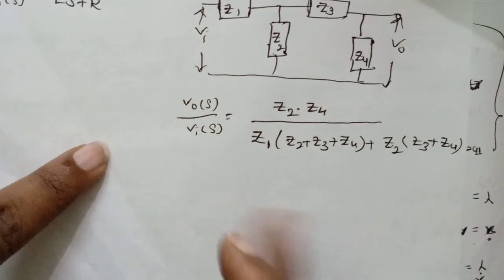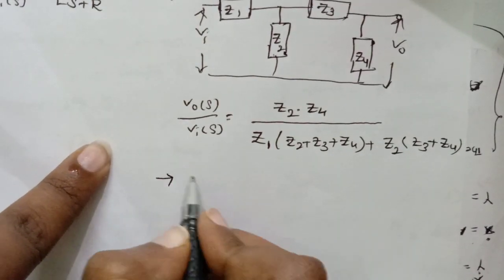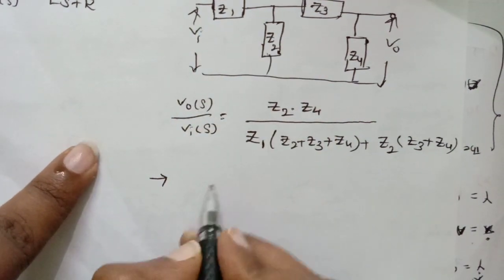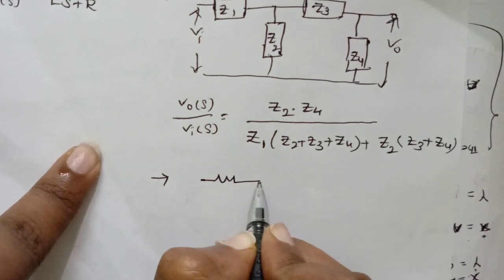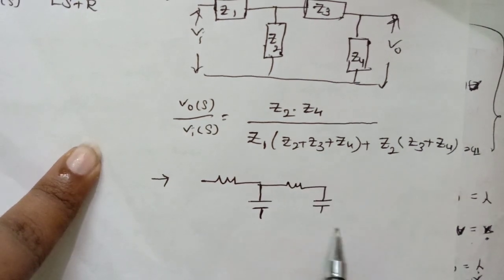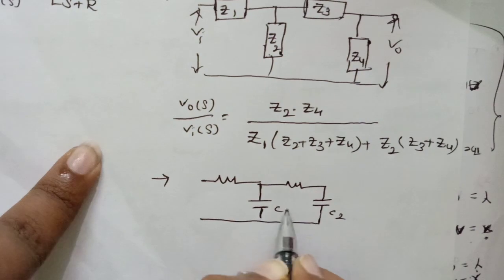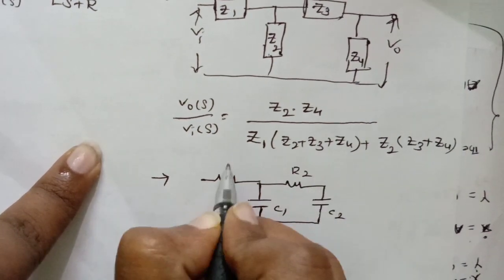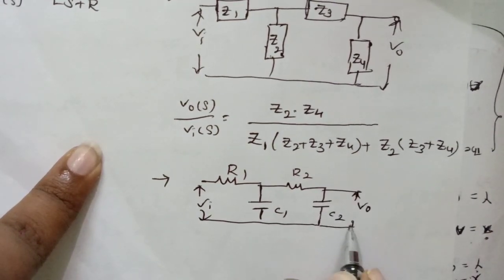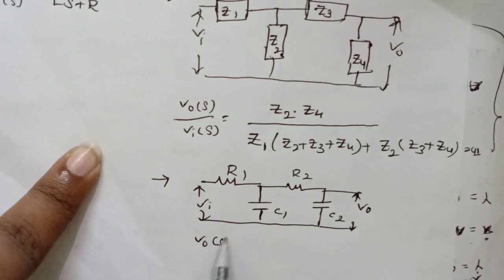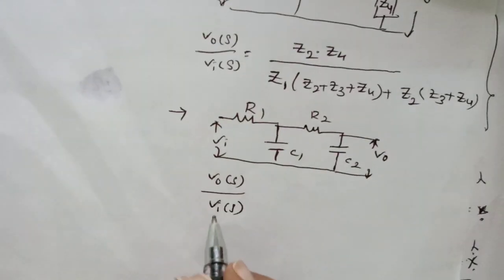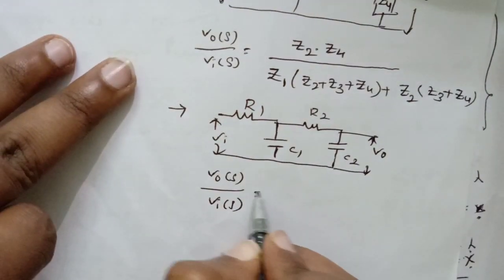I'll be giving a small example. See here: this is R2, this is C2, this is C1, this is R1. Input is Vi and output is V-naught. I want to write the transfer function V-naught(s) by Vi(s). According to our trick, we can write the transfer function directly.